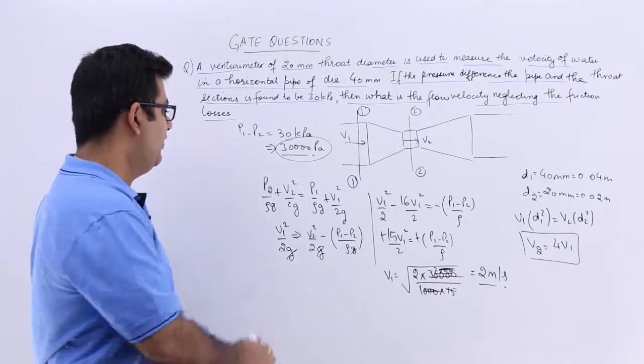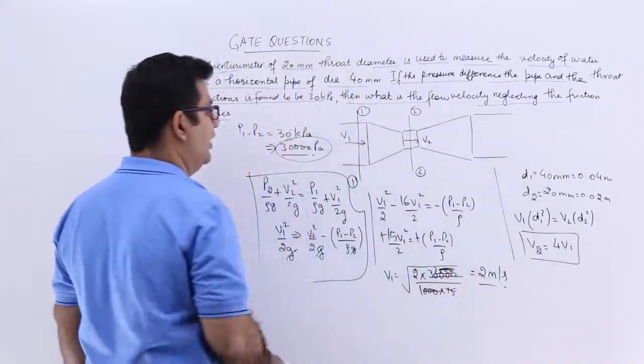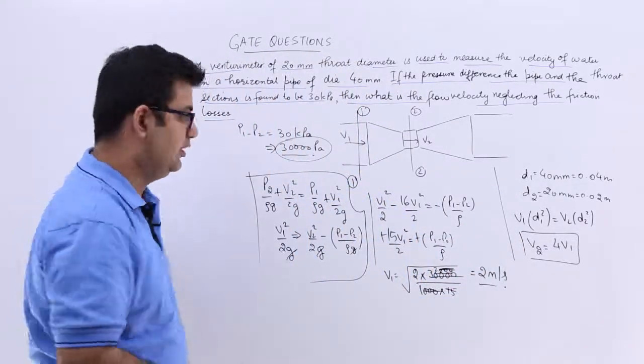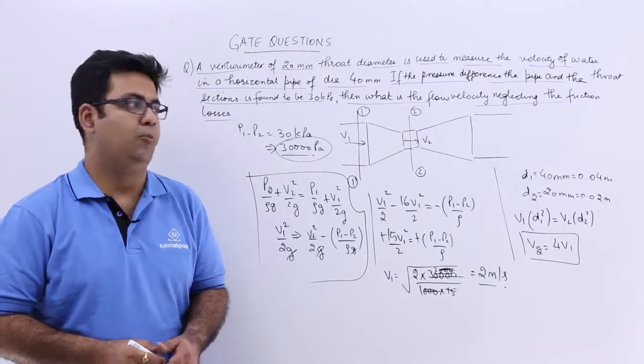So again a very simple question, a very basic question. Draw a diagram, write down the given data, look at what is to be found out, and then apply the Bernoulli's equation to calculate that. So I hope you understood this.